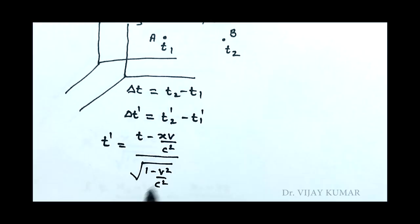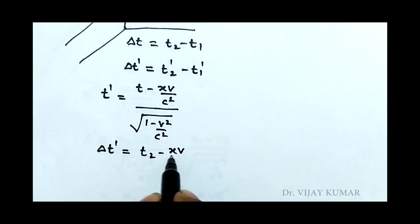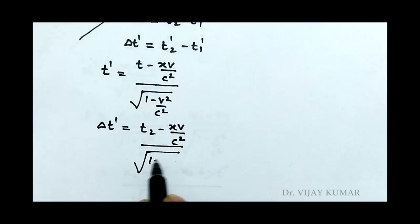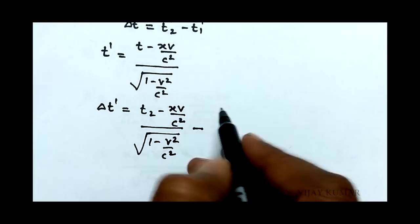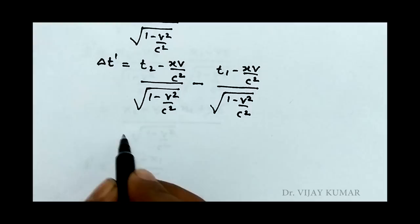Now delta t dash becomes t2 dash means t2 minus xv upon c square upon under root 1 minus v square upon c square, minus t1 dash means t1 minus xv upon c square upon under root 1 minus v square upon c square.